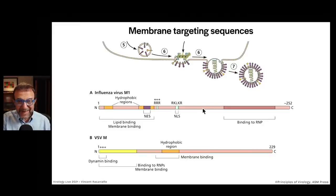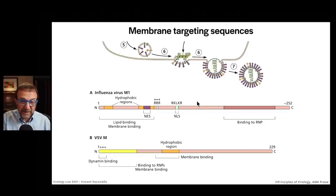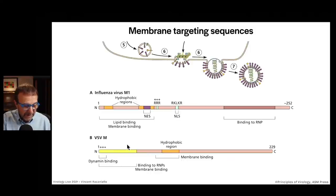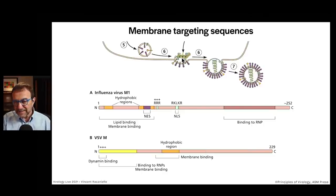People have systematically changed the coding region for this protein and looked at the effects on virus reproduction at a subcellular level. The M1 is made in the cytoplasm, gets into the nucleus by an NLS, there it binds to the RNA, then gets out of the nucleus by a nuclear export signal, and finally binds to the membrane via hydrophobic regions at the N-terminus. The analogous protein of vesicular stomatitis virus has similar sequences — the N-terminus is involved in RNA binding and a hydrophobic region for membrane binding. This is how the genomes of these two viruses are targeted to the membrane.